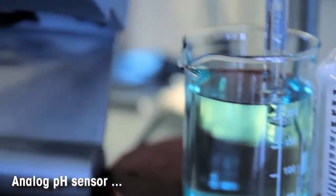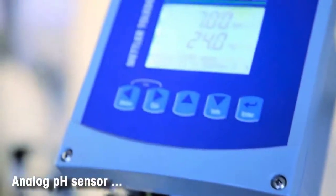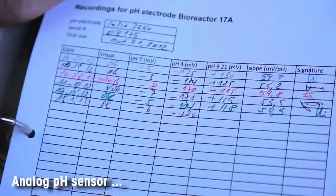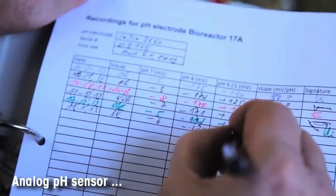Calibration of an analog pH sensor must be performed directly with the transmitter. After calibration, you must document the new data in your records.